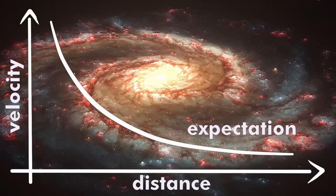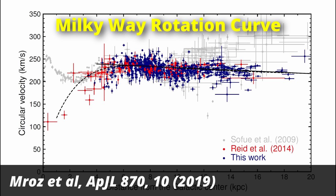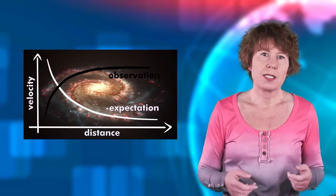The problem is that for most galaxies we observe, these rotation curves do not drop. For stars far away from the galactic center, they remain roughly constant. This is what's called a flat rotation curve, and it's also the case for the Milky Way. So we have an observation that doesn't agree with the prediction. That is bad.